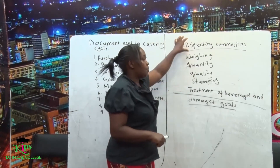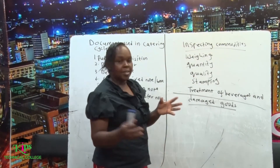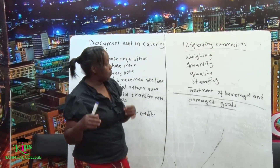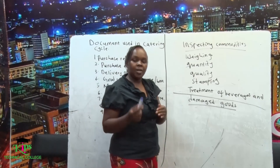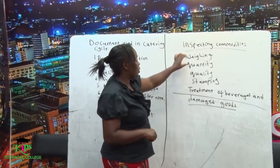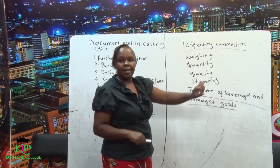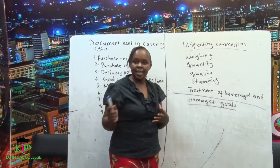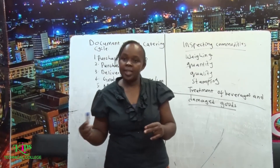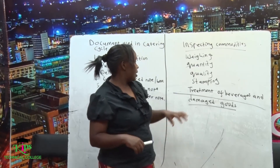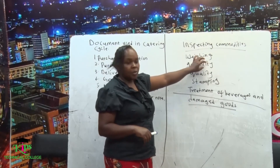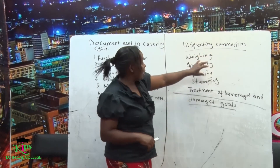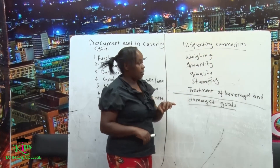Now, in inspecting commodities — because we have received the items, we need to inspect them. The first thing we do when inspecting commodities is weigh everything that is brought into the restaurant. There is weighing and counting; you don't receive without weighing. You have to record the details and look at the quantity. If you had requested for 500 grams of sugar, you have to weigh and confirm that is the quantity you requested for.